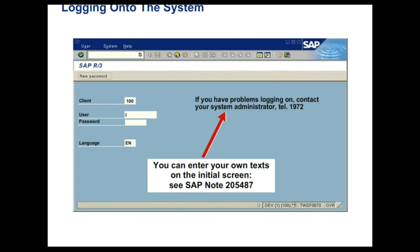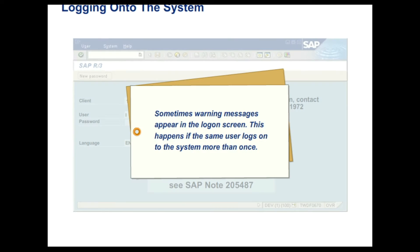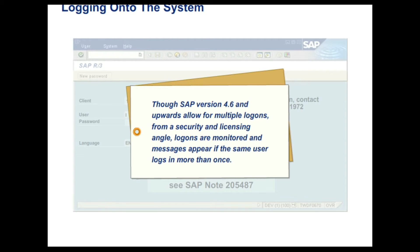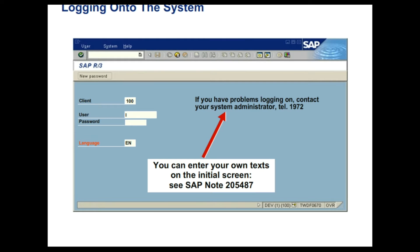Every user has a unique username and password. Sometimes warning messages appear in the logon screen. This happens if the same user logs on to the system more than once. Though SAP version 4.6 and upwards allow for multiple logons, from a security and licensing angle, logons are monitored and messages appear if the same user logs in more than once. The language input field facilitates selecting the language that you want to work with. SAP has certain standard languages which can be used as required.